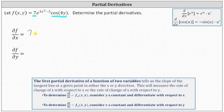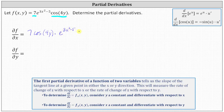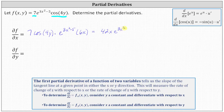The partial of f with respect to x is equal to seven times cosine four y times the derivative of e to the power of the quantity three x squared minus five with respect to x, which is e to the power of three x squared minus five times the derivative of three x squared minus five with respect to x, which is six x. Notice we had to apply the chain rule. Simplifying, seven times six x is forty-two x. So the partial of f with respect to x equals forty-two x times e to the power of the quantity three x squared minus five times cosine four y.